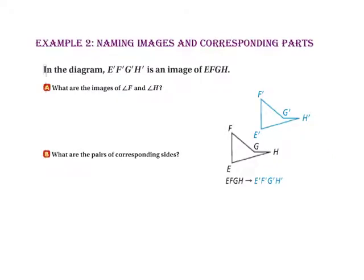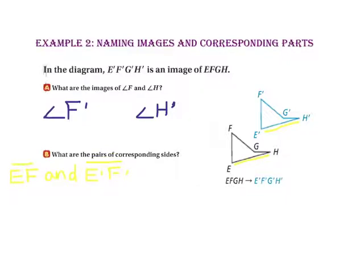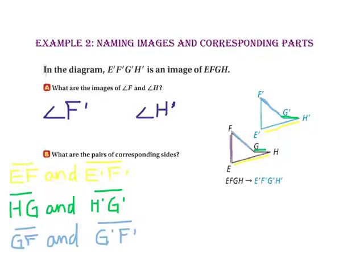In example 2, we will name images and corresponding parts. For part A, what are the images of angle F and angle H? Since E', F', G', H' is an image of figure EFGH, angle F' will be the image of angle F, and angle H' will be the image of angle H. In part B, we will name the pairs of corresponding sides. Side EH corresponds to side E'H'. Side HG corresponds to side H'G'. Side GF corresponds to side G'F'. And finally, side FE corresponds to side F'E'.